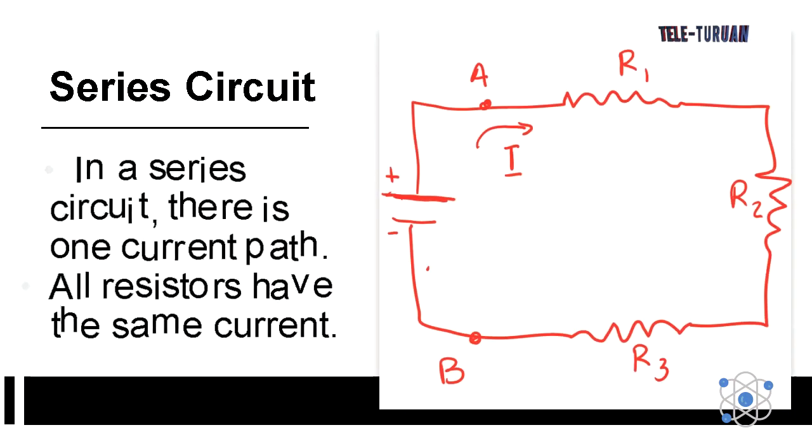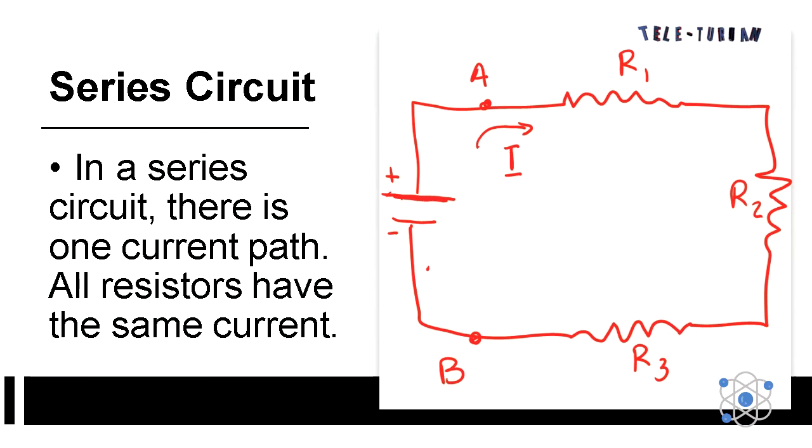In a series circuit, there is one current path. All resistors have the same current.